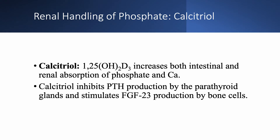Calcitriol — 1,25-dihydroxy D — increases both the intestinal and renal absorption of phosphate and calcium, not just in the kidneys but also in the intestines. Calcitriol inhibits PTH production, while PTH stimulates calcitriol production. Specifically, calcitriol suppresses the parathyroid glands, but it also stimulates FGF23 production by the bones.